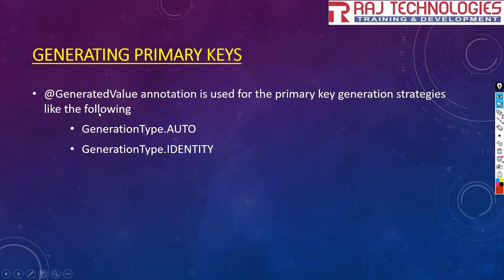To generate primary keys using Hibernate, we use the @GeneratedValue annotation. We can generate keys in two ways: GenerationType.AUTO and GenerationType.IDENTITY. Let us understand how to use AUTO and IDENTITY with example code.